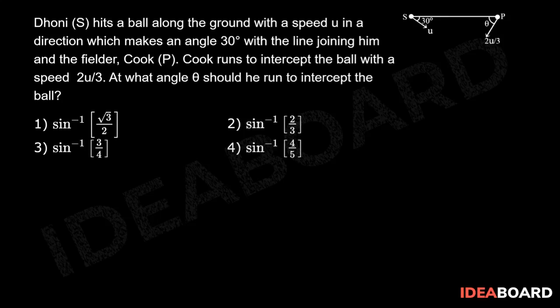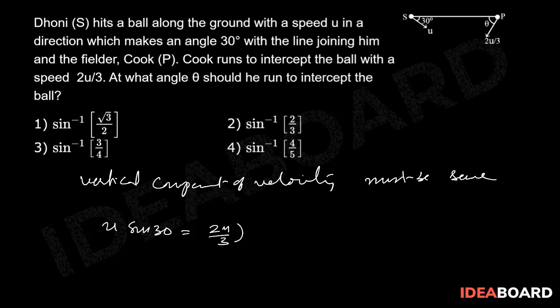The vertical component of velocities must be the same, so u sin 30 equals 2u by 3 into sin theta. u cancels out: 1 by 2 equals 2 by 3 into sin theta, implies sin theta equals 3 by 4. Therefore theta equals sin inverse 3 by 4. So 3 is the correct option.